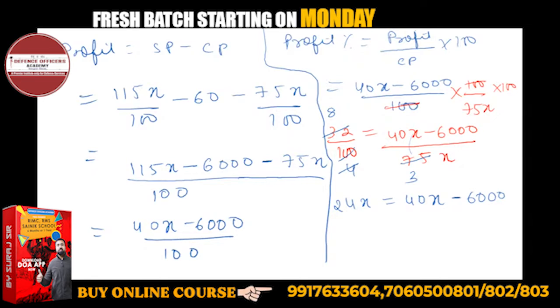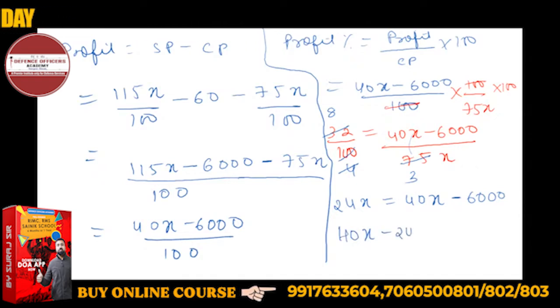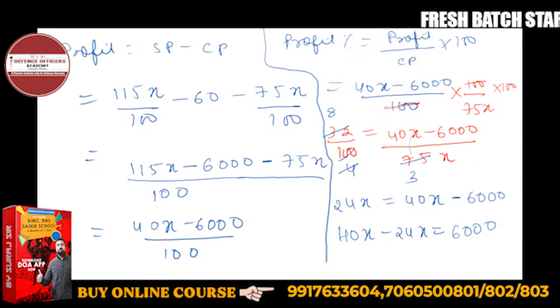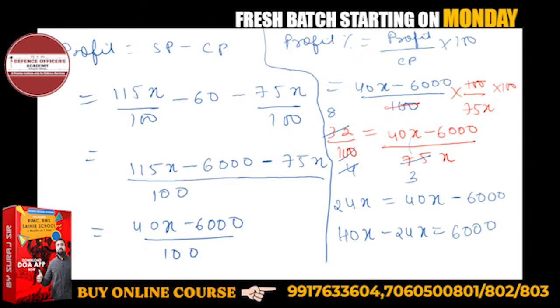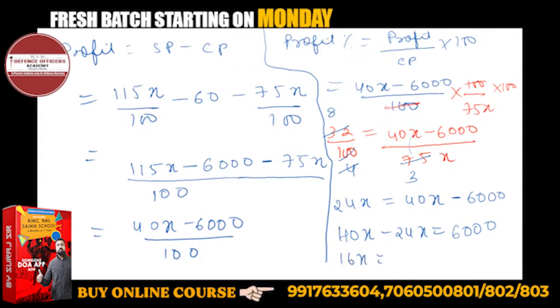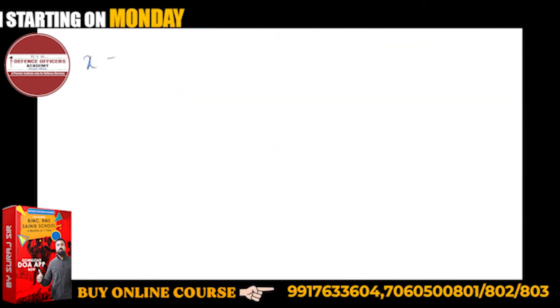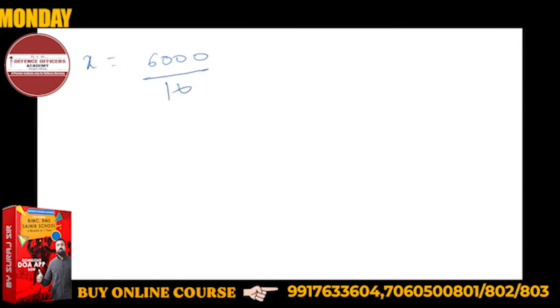40x minus 24x equals 6000. This gives you 16x equals 6000. So x will be 6000 upon 16.